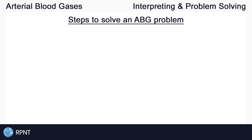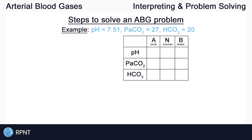Now let's walk through the steps to solve and interpret an ABG problem using an example. Let's say we're given the following ABGs: pH equals 7.51, PaCO2 equals 27, and HCO3 equals 20. I like to set up my problems with a chart like this — we have our ABGs written on the left, and on the top we have the categories for acids, neutrals, and bases. You can quickly draw a little chart like this on a test.